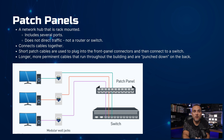Patch panels are rack-mounted network hubs with multiple ports that connect cables together without directing traffic like a router or switch would. Short patch cables link the front panel connectors to a switch, while longer cables establish a more permanent connection throughout the building, punched down at the back of the patch panel.